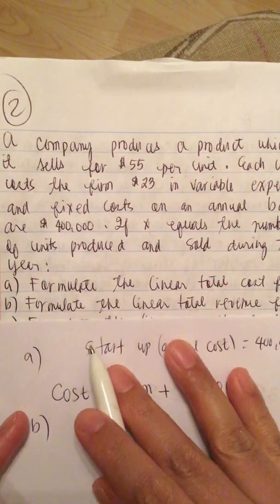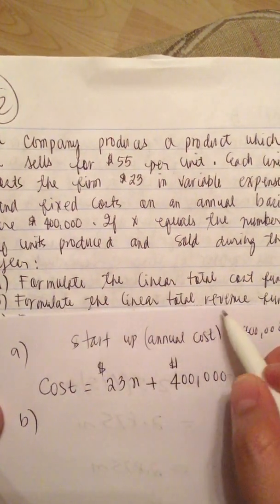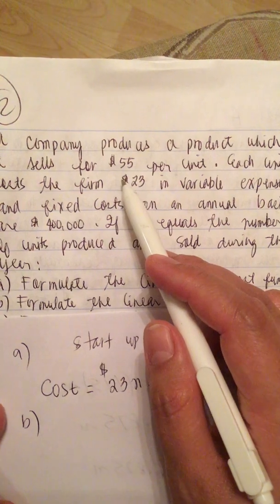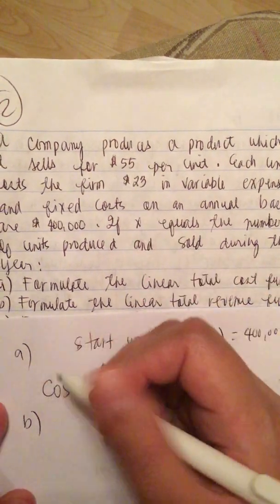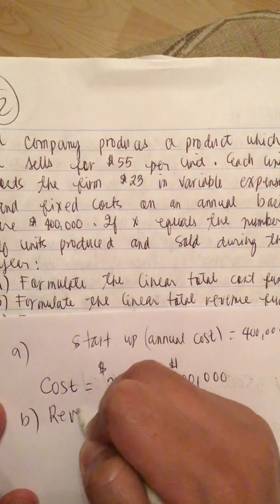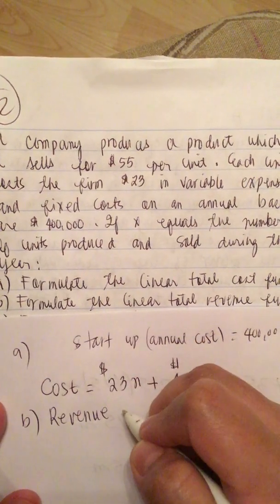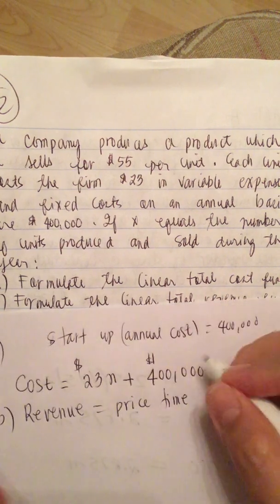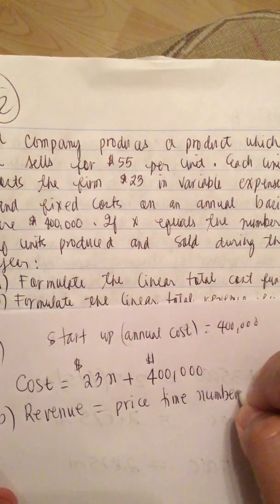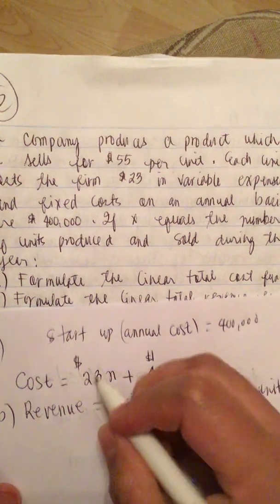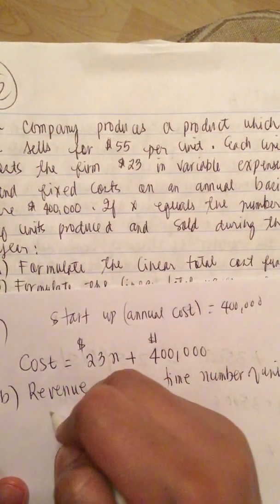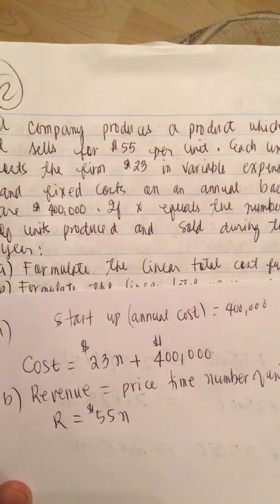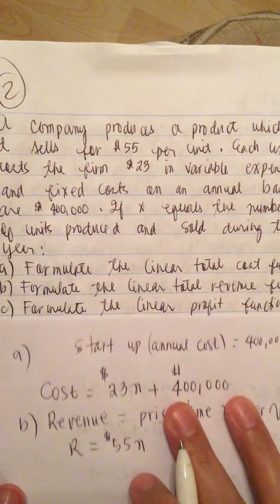And then B. Formulate the linear total revenue function. So each unit sells for $55, so revenue is equal to the price times the number of units. And then C.